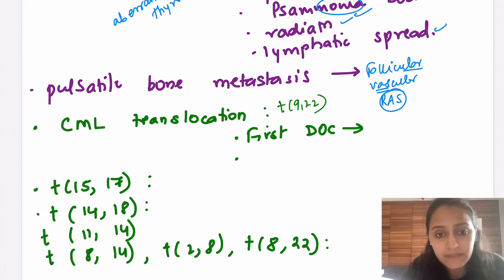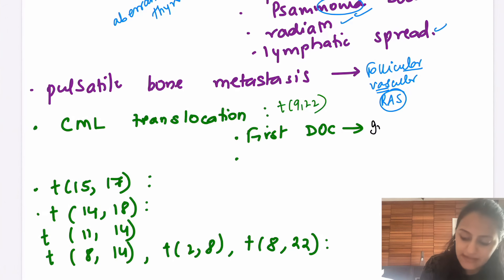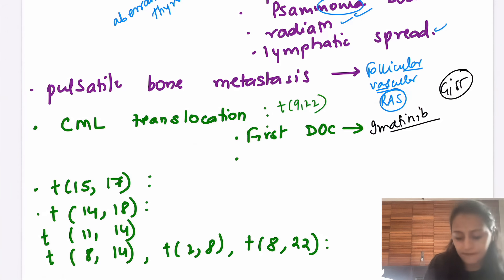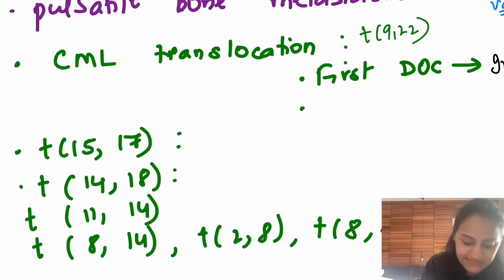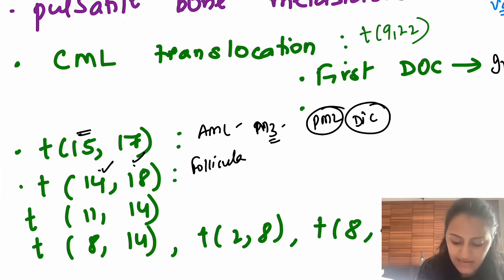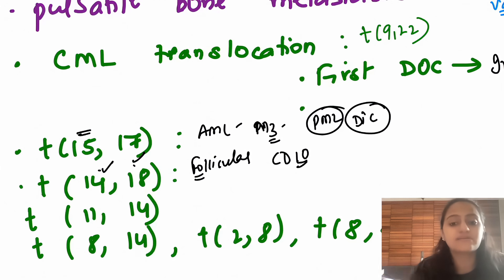In CML, the translocation is t(9;22) — the Philadelphia chromosome. The first drug of choice in CML is imatinib, also used in GIST. Translocation t(15;17) — remember three fives are 15 — is AML subtype M3, promyelocytic leukemia (PML). DIC is common in AML M3 and you see Auer rods / faggot cells. Translocation t(14;18) is follicular carcinoma, CD10 positive, with waxing and waning lymph nodes.